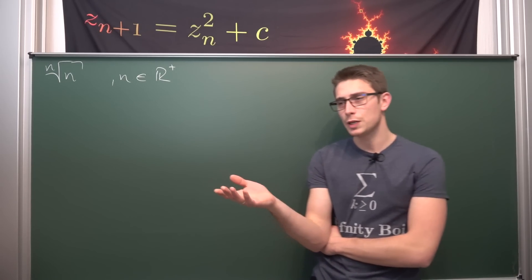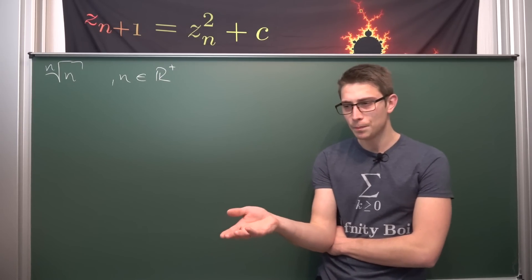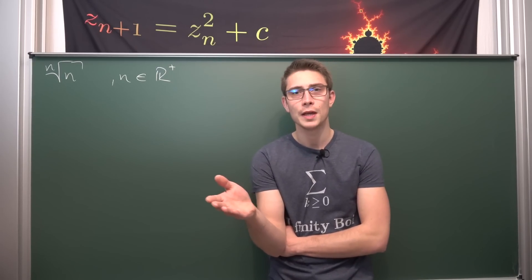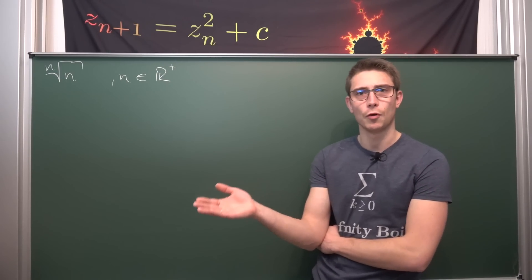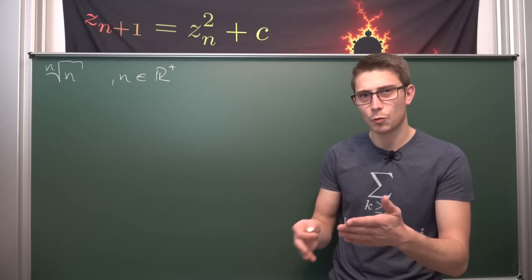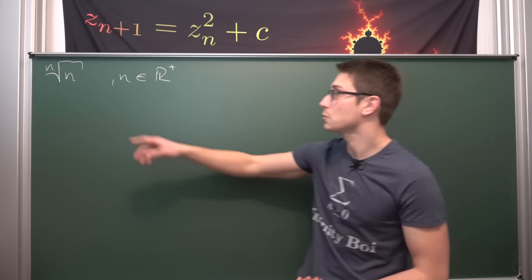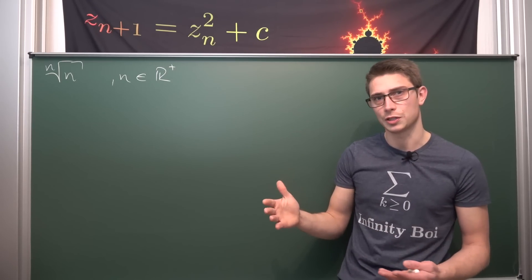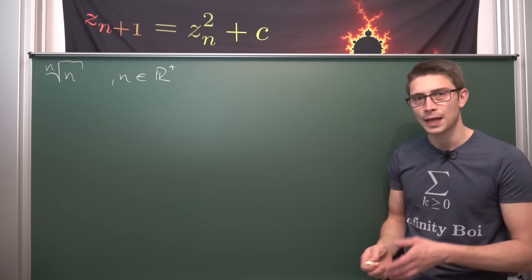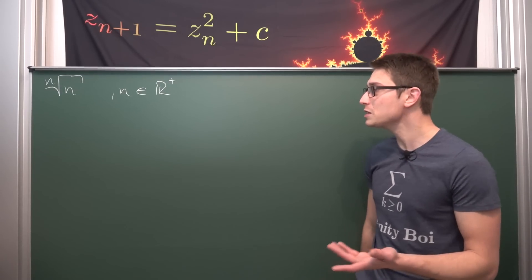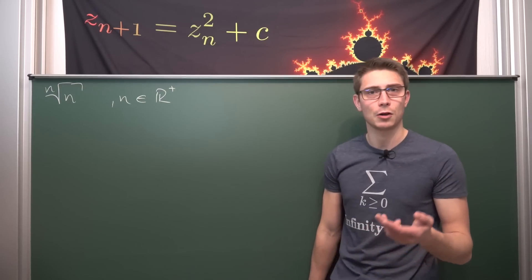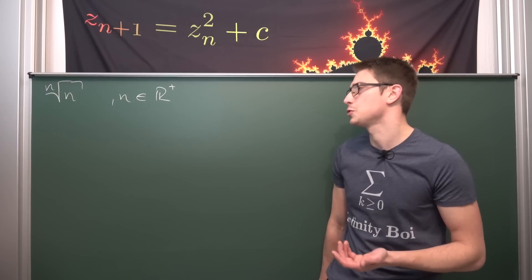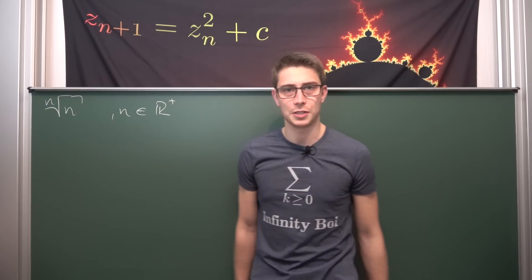So somewhere between the 1st root of 1 and the square root of 2, it increases, and then starting around the cube root of 3 and the 4th root of 4, it starts decreasing. Since n can also be 2.5, there has to be some kind of maximum point. We want to find out what this maximum point is of our function, and we'll also look at two other important points to understand the behavior and then sketch the graph.